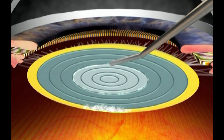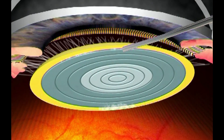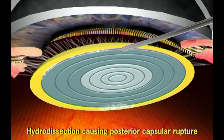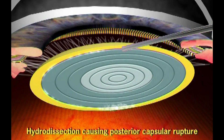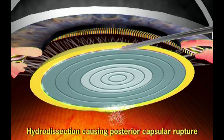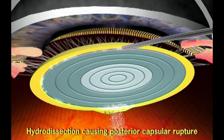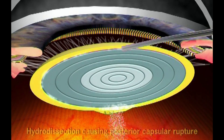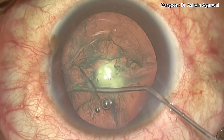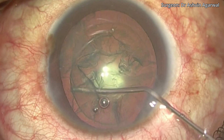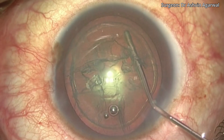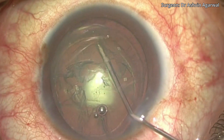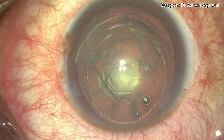Hydrodelineation is then done. Hydrodissection should be avoided in PPC because the hydraulic pressure from the fluid injection can cause a posterior capsular rupture, due to the adhesions between the PPC and the posterior capsule and a thin posterior capsule over this particular area.